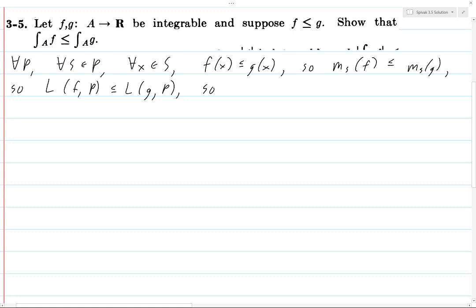So now we basically start with the integral of F over A, and this is by definition the supremum of L of F,P, the supremum over all partitions P. And we know that this equality holds because F is in fact integrable.